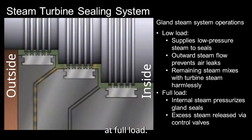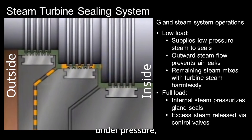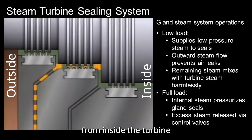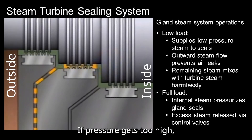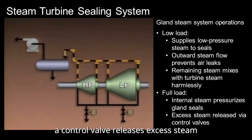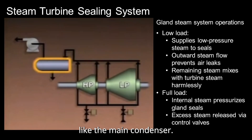At full load, when most of the turbine operates under pressure, steam from inside the turbine pressurizes the gland seals. If pressure gets too high, a control valve releases excess steam to a low-pressure area, like the main condenser.